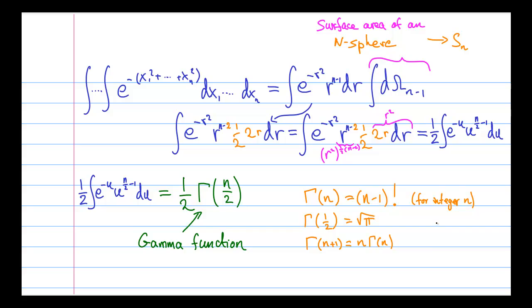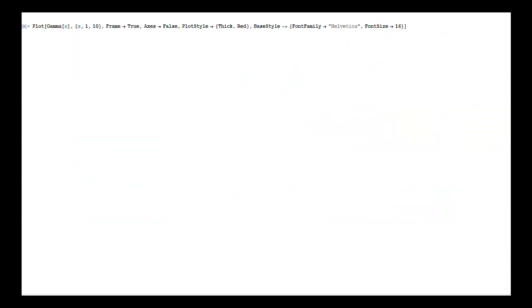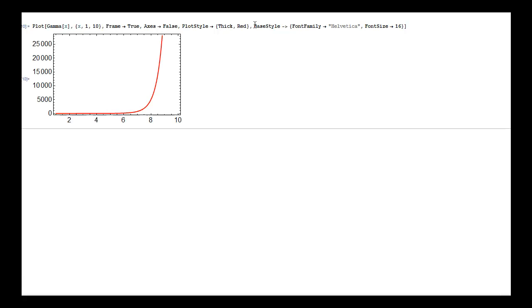And of course you can use the gamma function to play hangman. Now because gamma function is kind of like a factorial, it grows very rapidly with increasing n, which you can see on the plot here. And this is something to keep in mind for later.